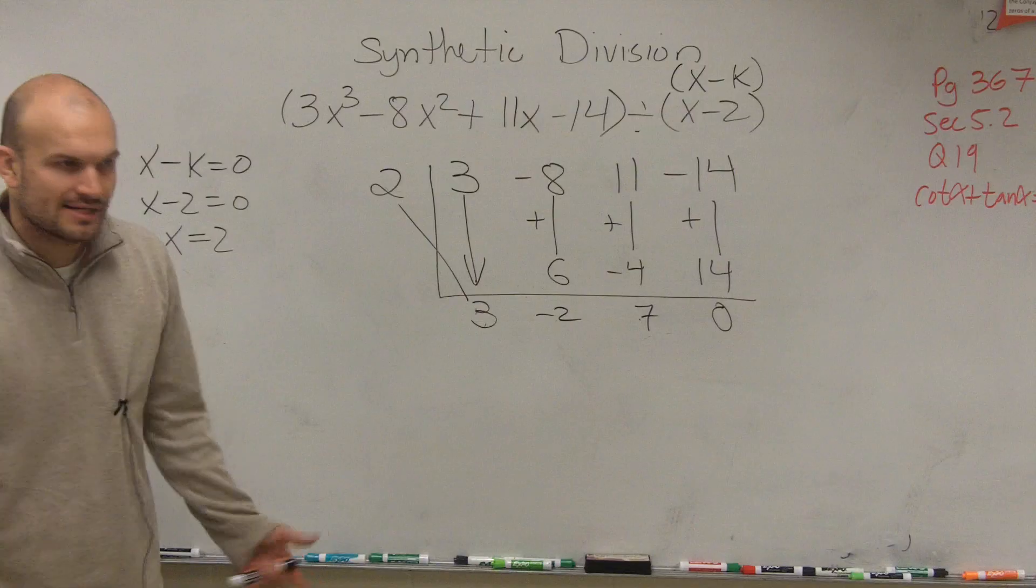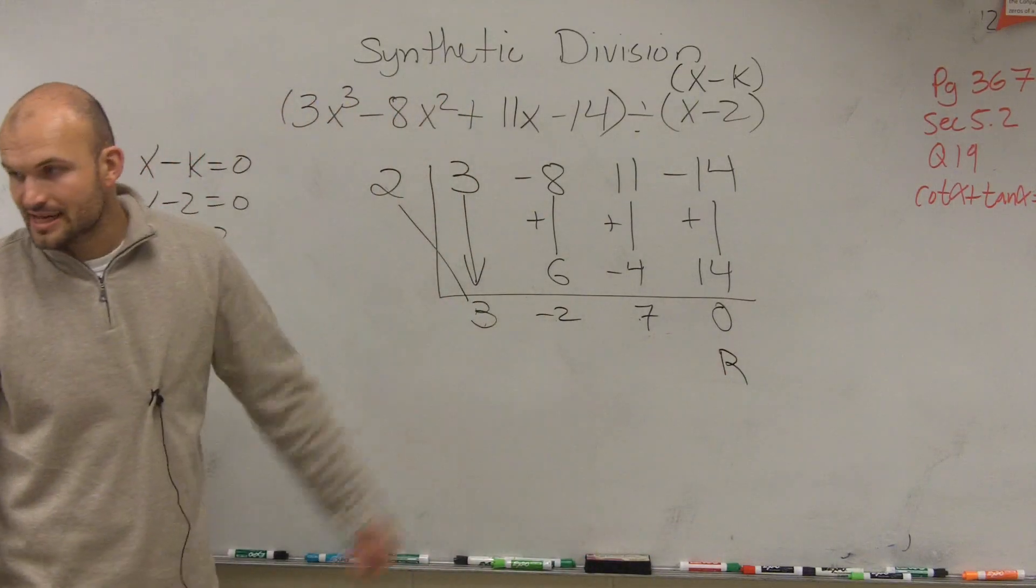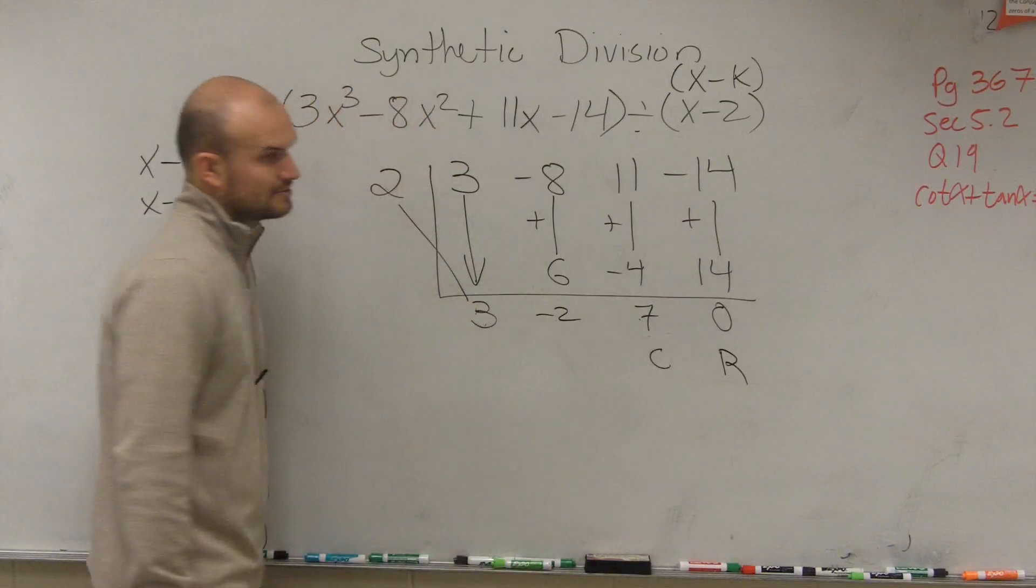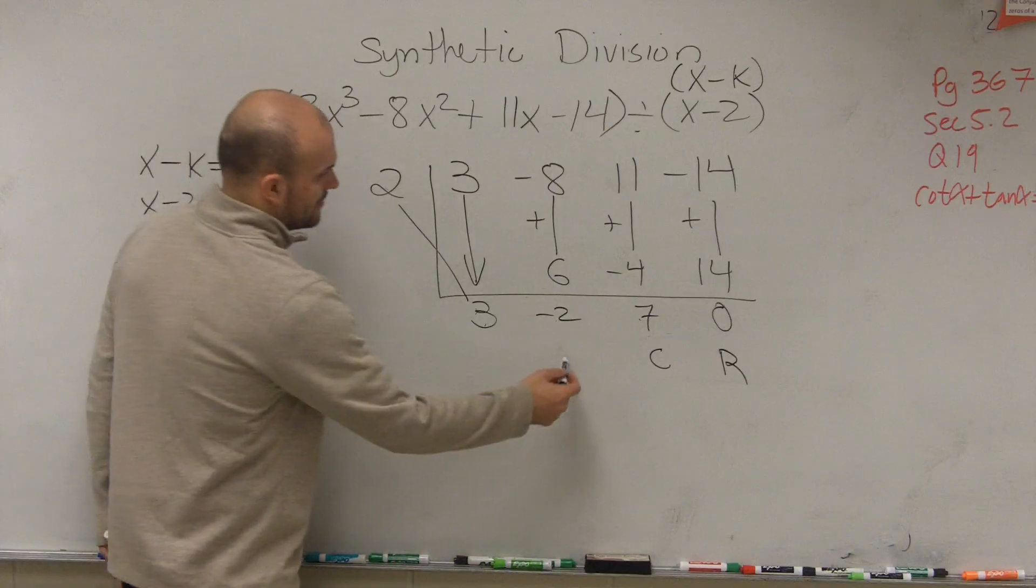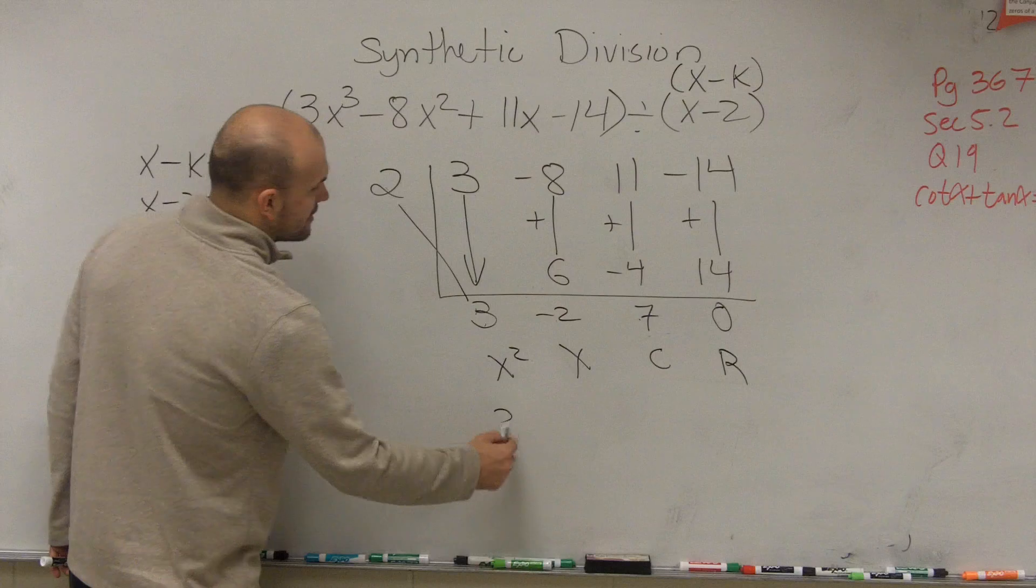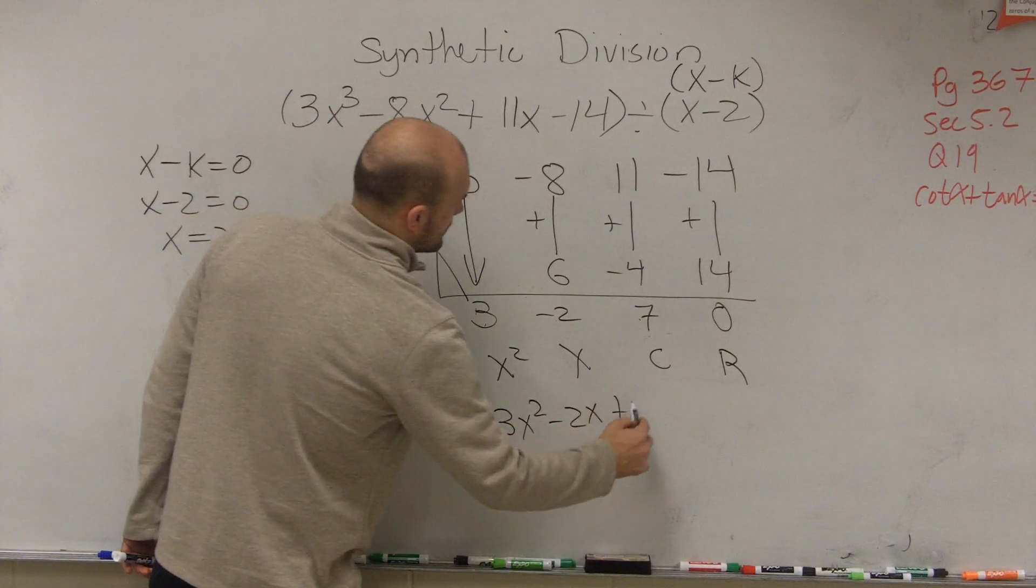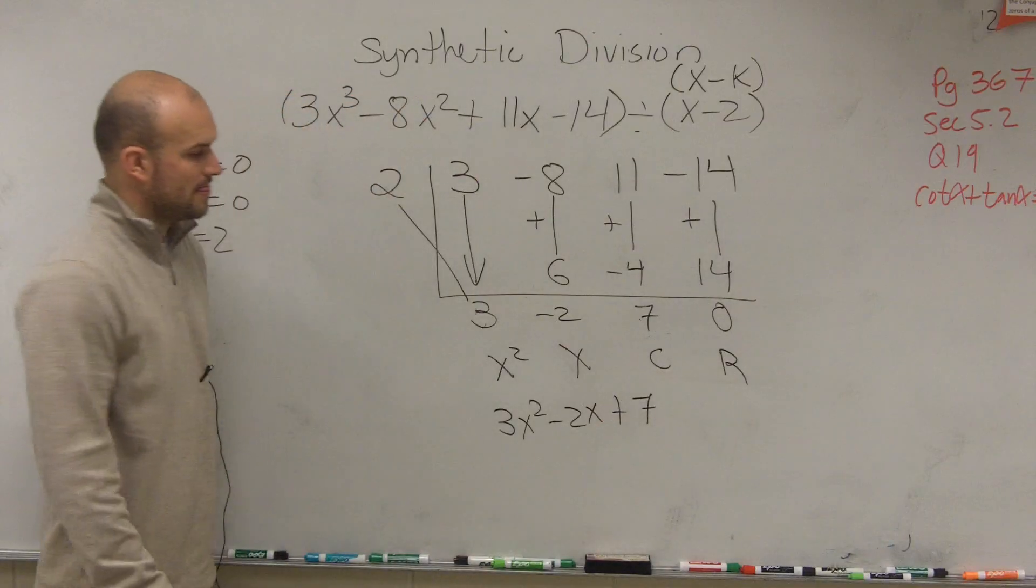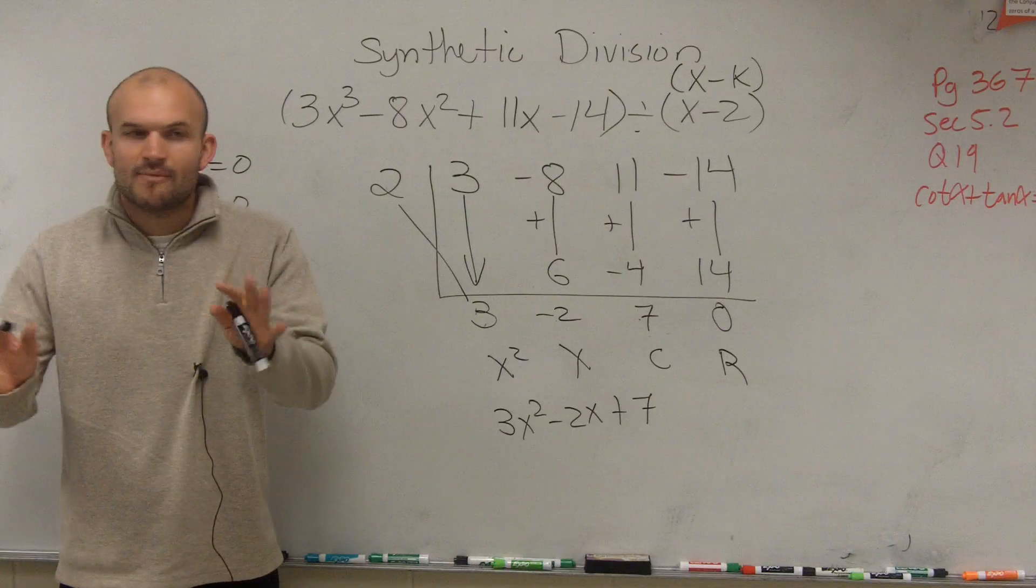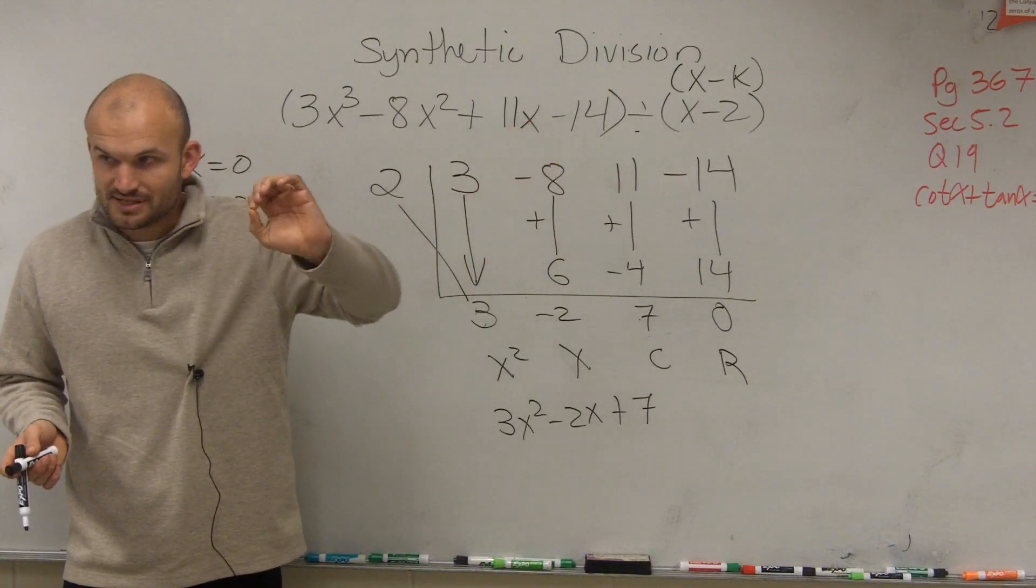Now we write our answer. The last number is always our remainder. In this case, we have a remainder of 0. The next is our constant, then our linear, then our quadratic. So our final answer is 3x squared minus 2x plus 7. Pretty easy, right? It's pretty basic compared to our long division method.